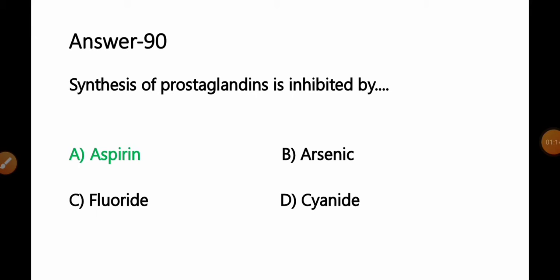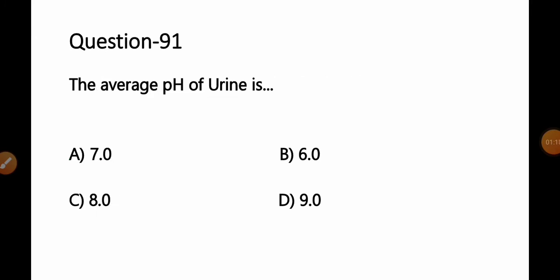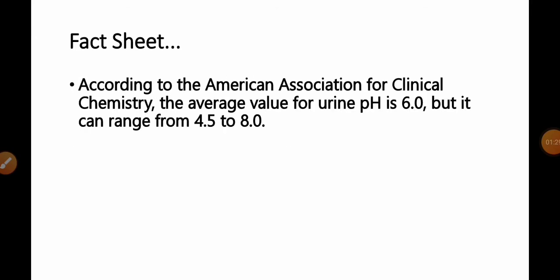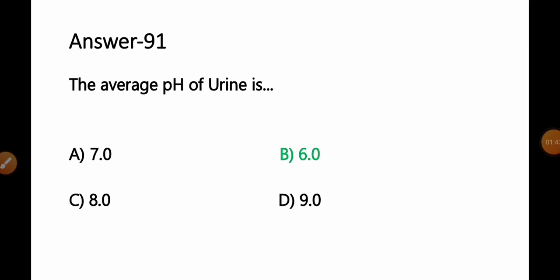Question 91: The average pH of urine is: A) 7.0, B) 6.0, C) 8.0, D) 9.0. Fact: According to the American Association for Clinical Chemistry, the average value of urine pH is 6.0, but it can range from 4.5 to 8.0. Therefore, option B, 6.0, is the correct answer.